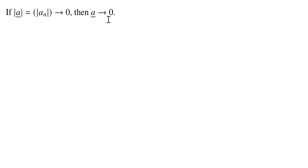And we'll see very easily this is just a consequence of the definition. We really don't have to work very hard here. So let's write down the definition. What does it mean for the absolute value sequence to converge to zero?